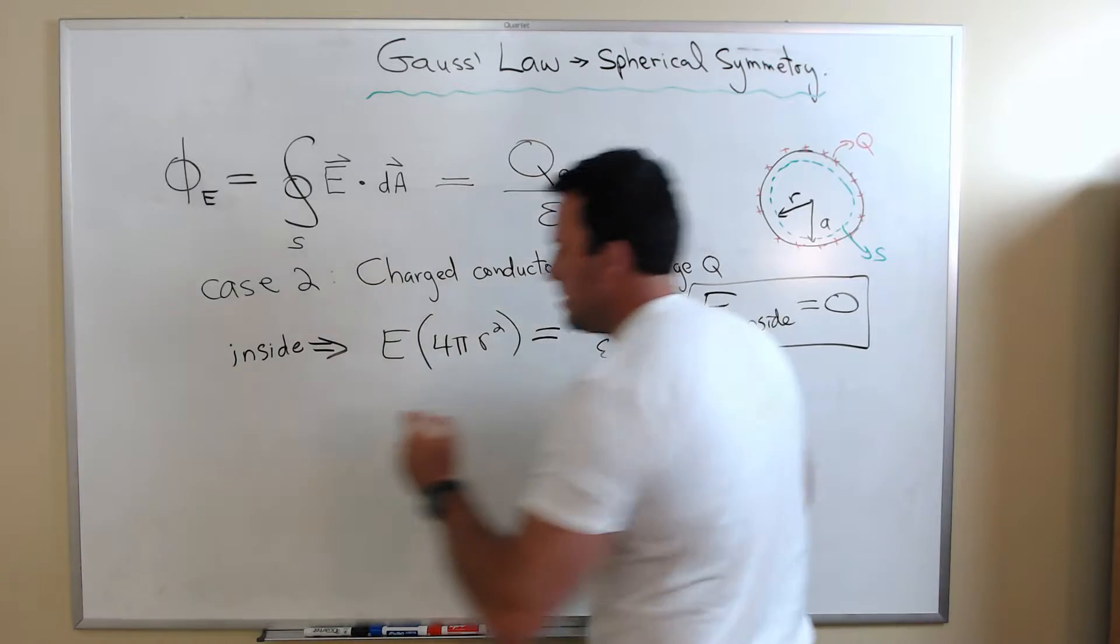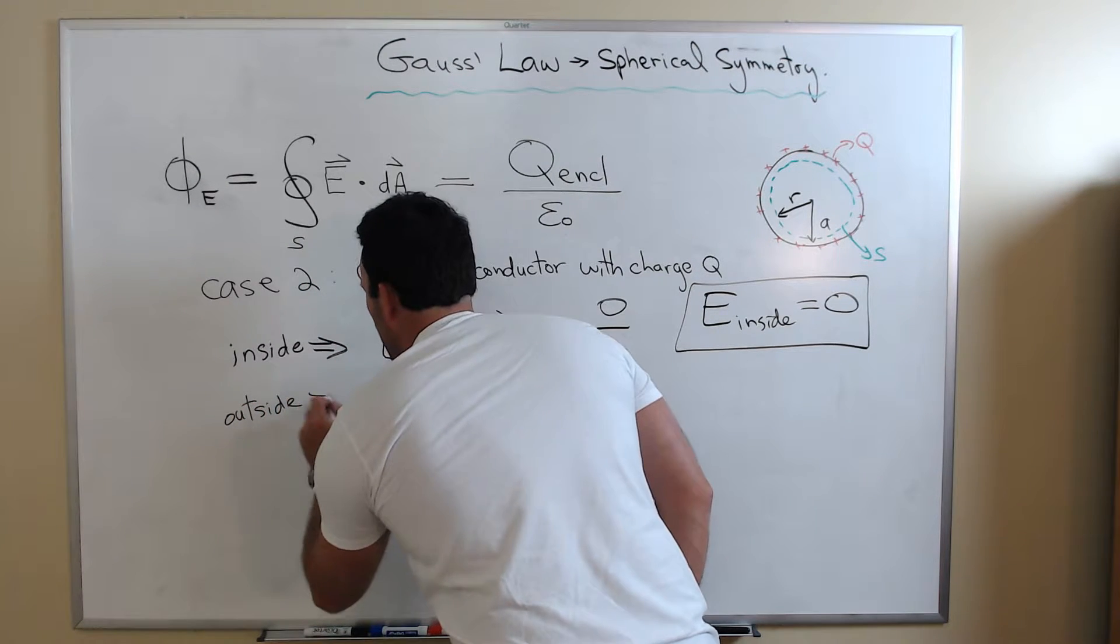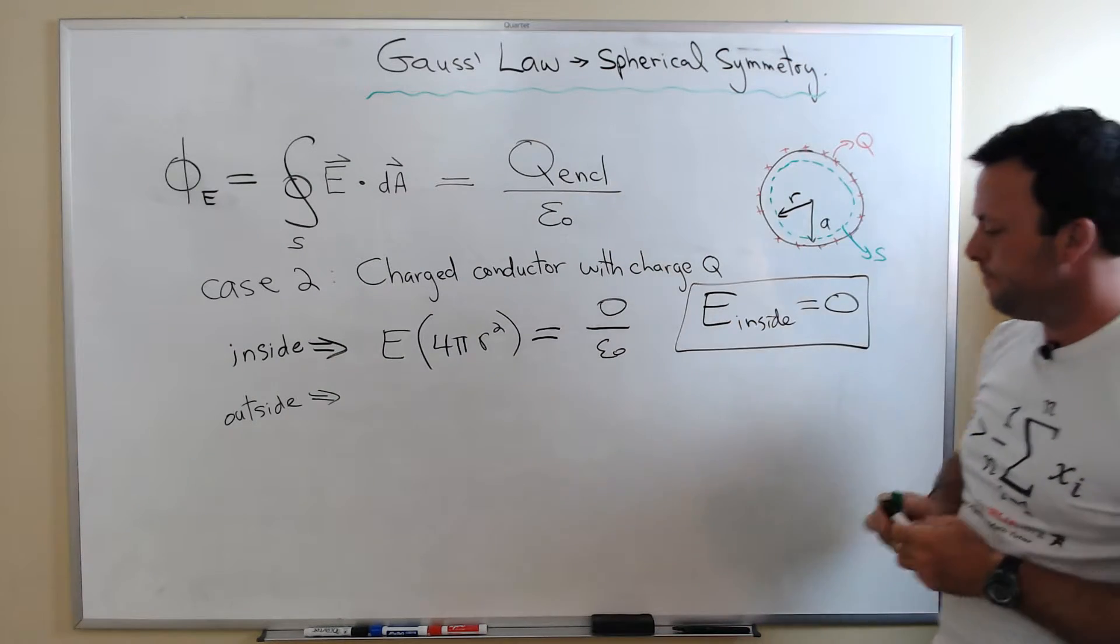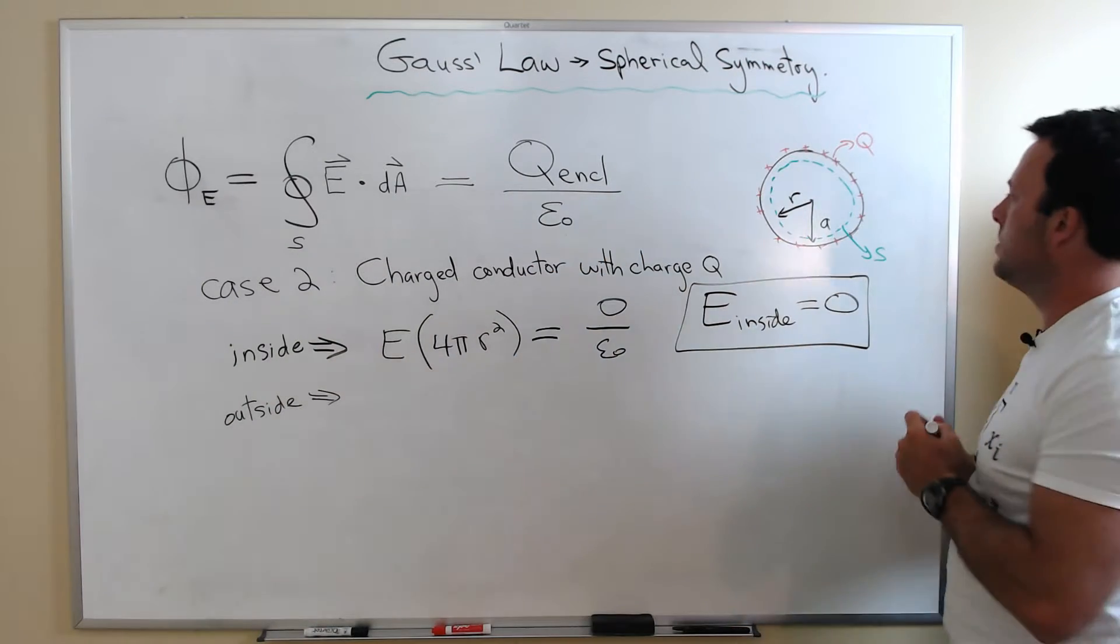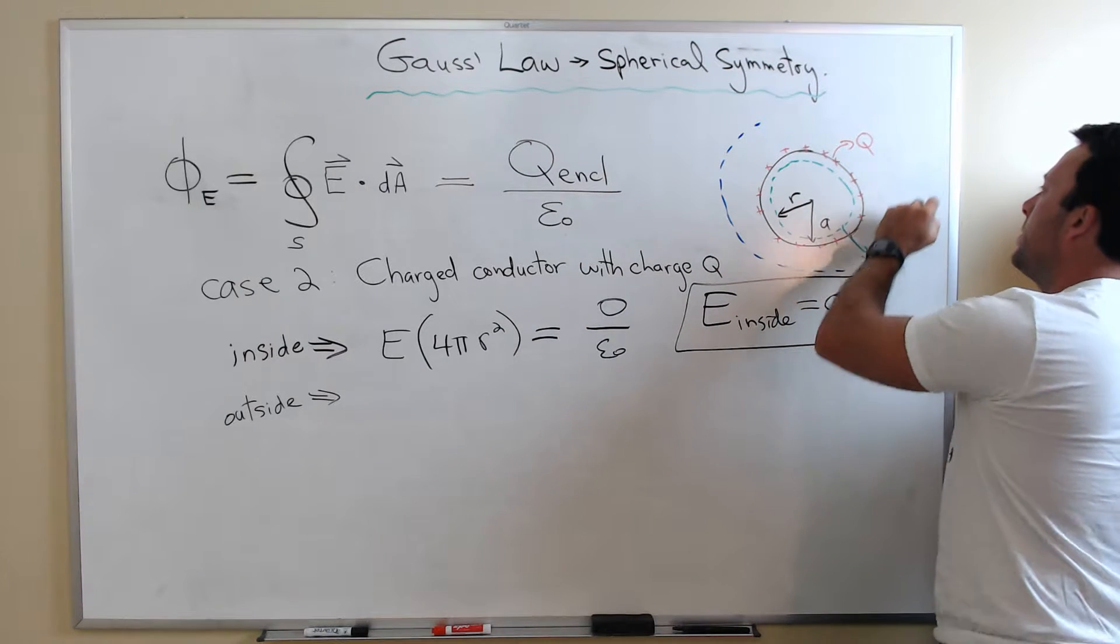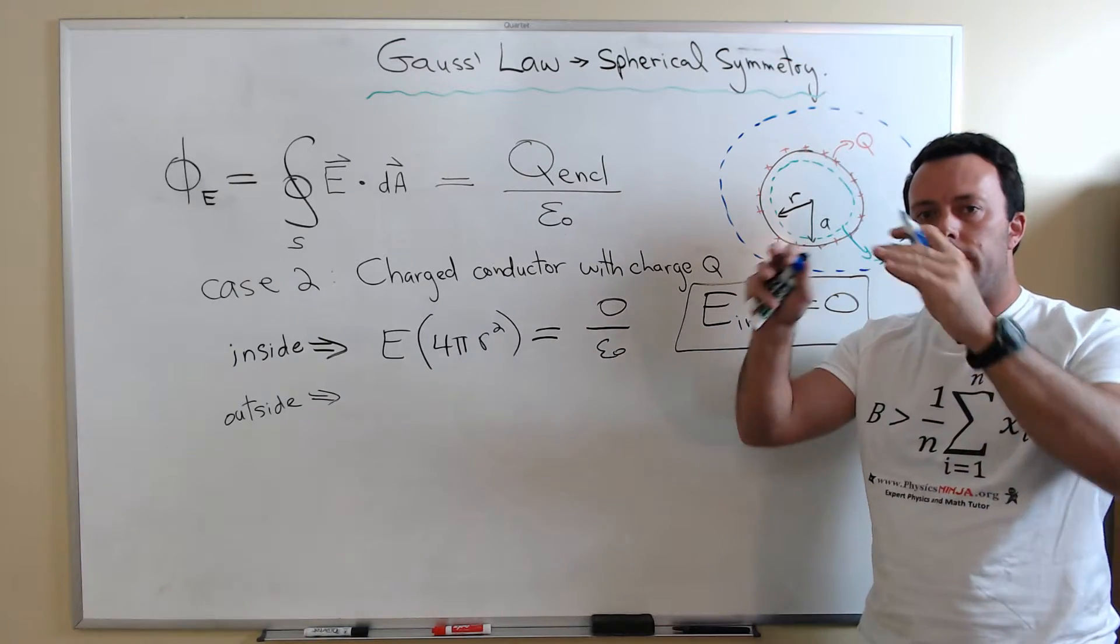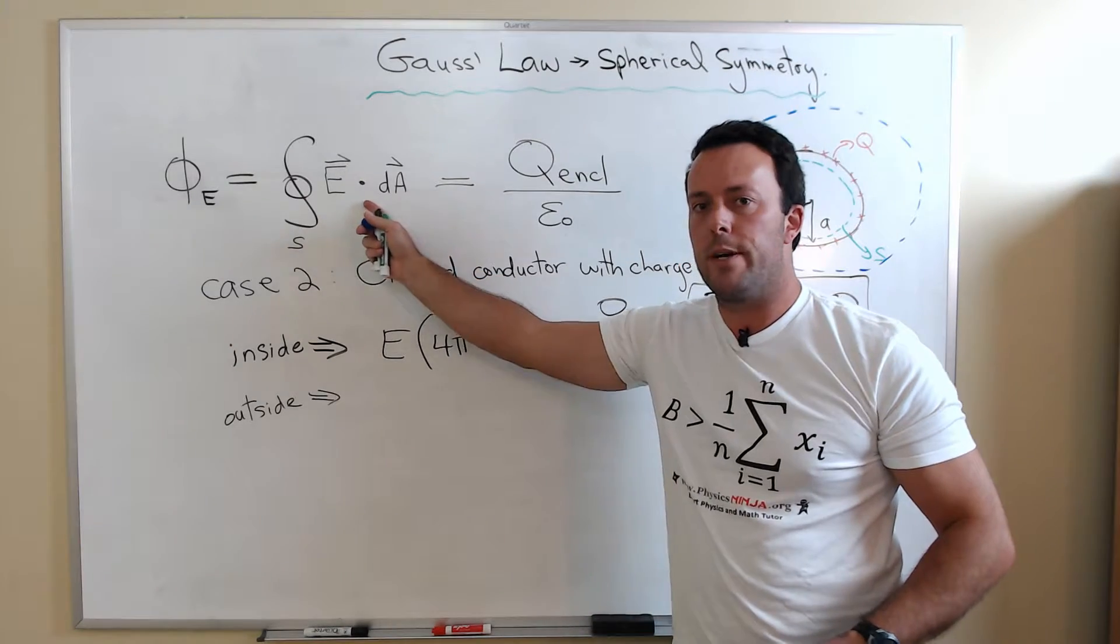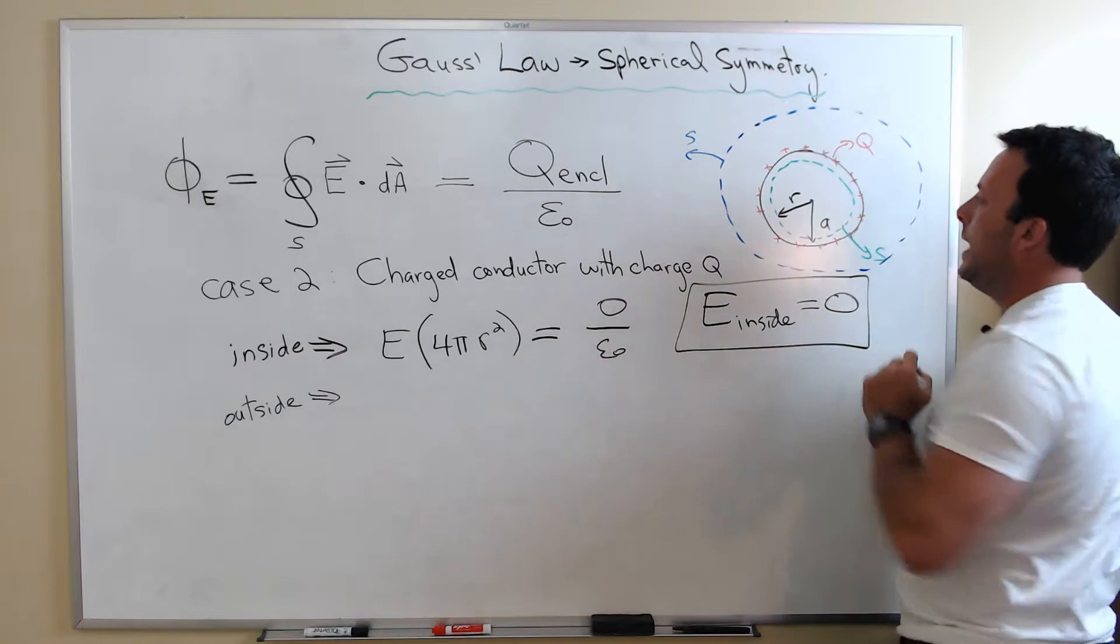Case number two is what about outside? How do you apply Gauss's Law to a point outside the surface of the conductor? Well, you want to basically put a Gaussian surface on the outside of the conductor. So let's go ahead and place a spherical Gaussian surface. Our surface should always have the same symmetry as the object. That makes it a lot easier to simplify this expression. So here's surface outside the conductor.